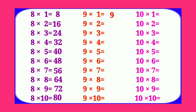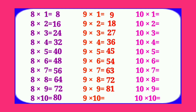9 2's are 18, 9 3's are 27, 9 4's are 36, 9 5's are 45, 9 6's are 54, 9 7's are 63, 9 8's are 72, 9 9's are 81, 9 10's are 90. Table of 10.